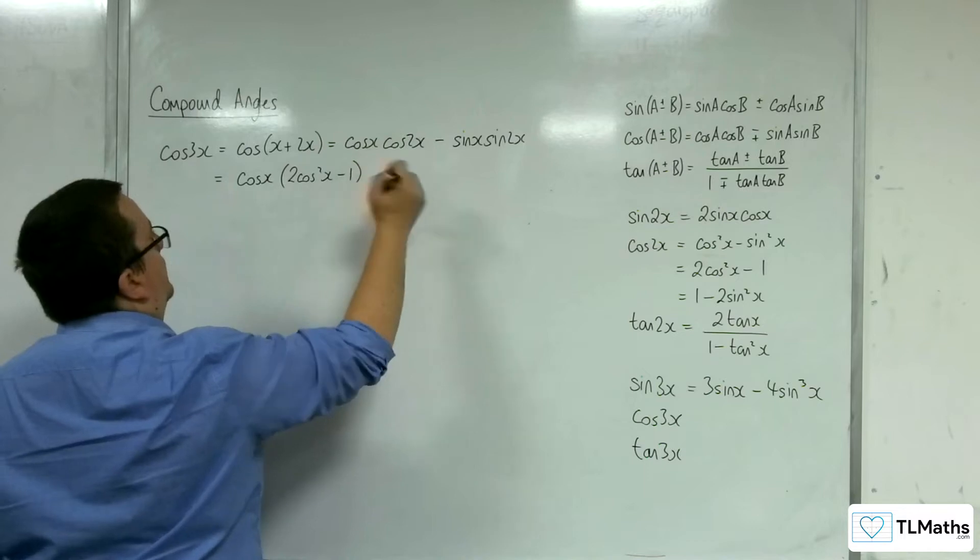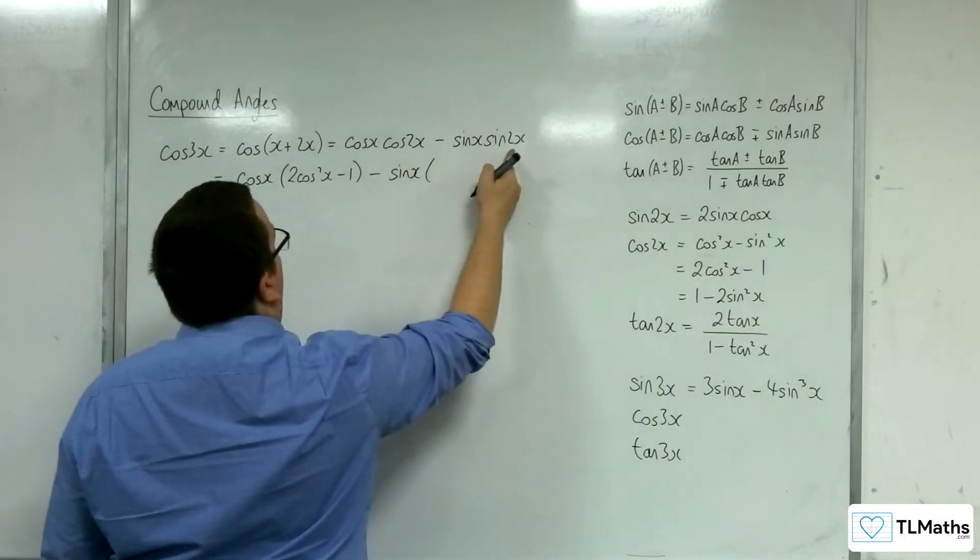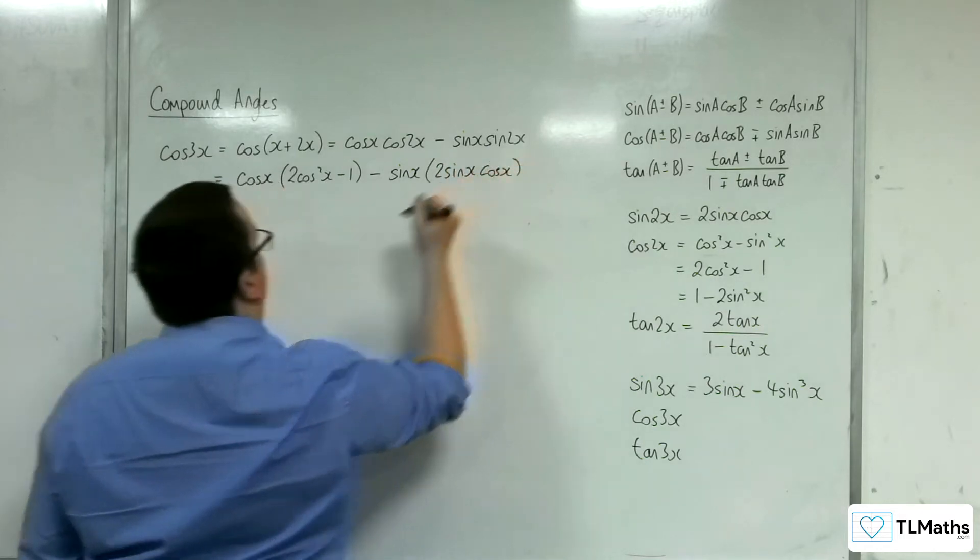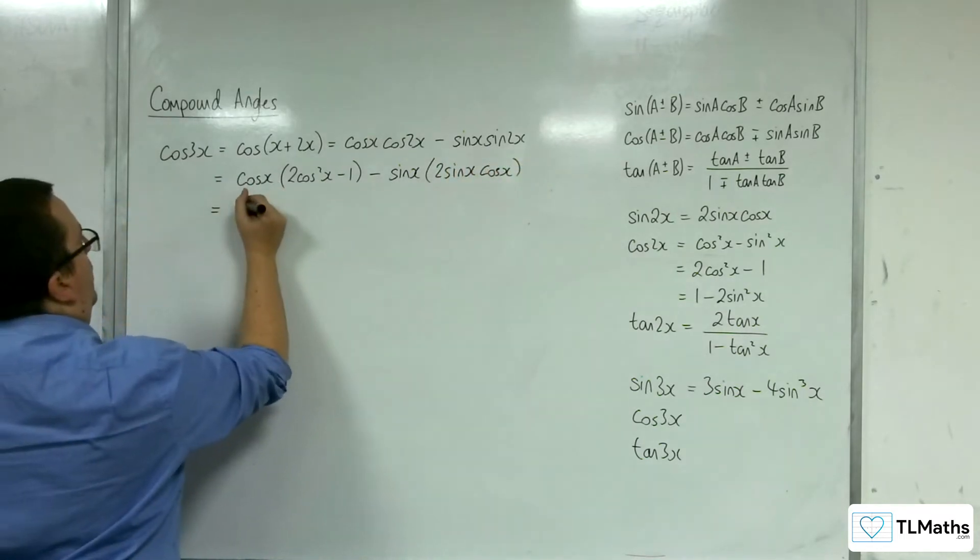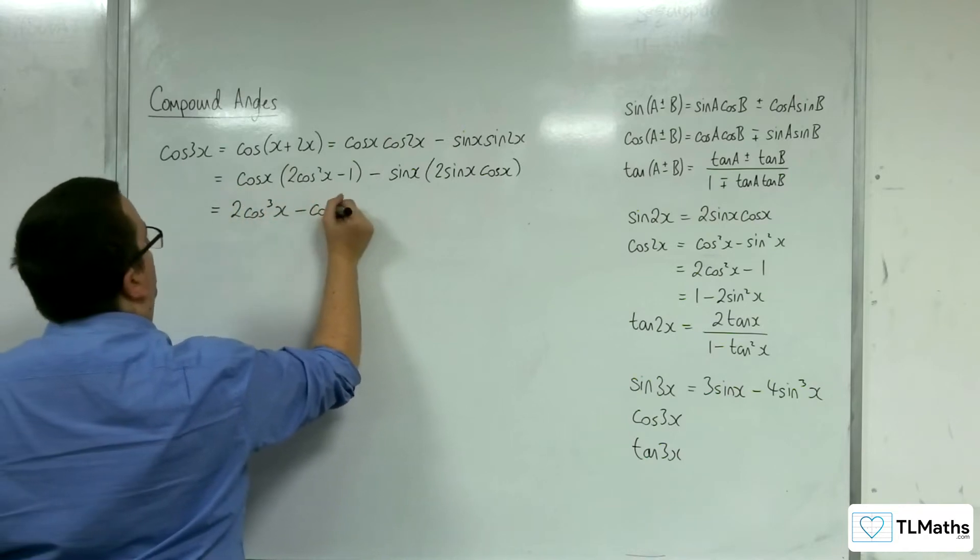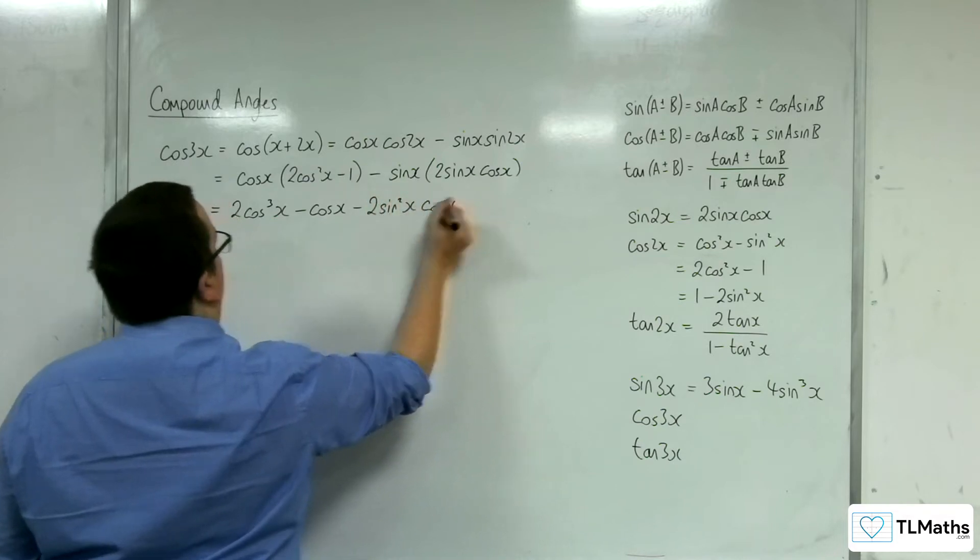Oh, rather subtract. We've got the sine x. And we're replacing the sine 2x with 2 sine x cosine x. So multiply through 2 cosine cubed x, take away cosine x, take away 2 sine squared cosine x.